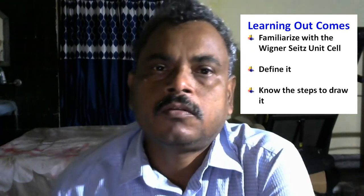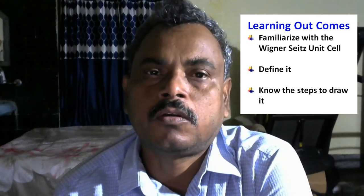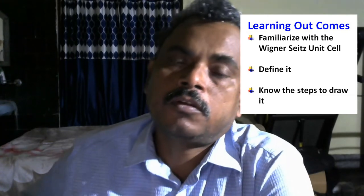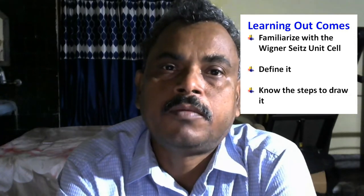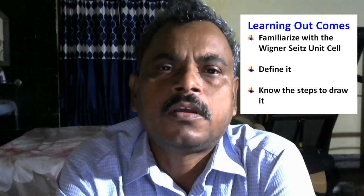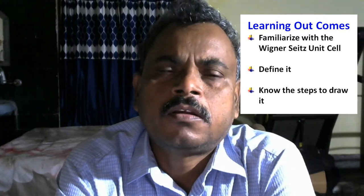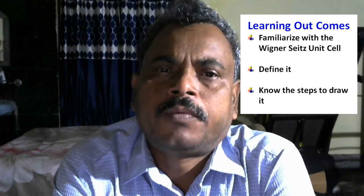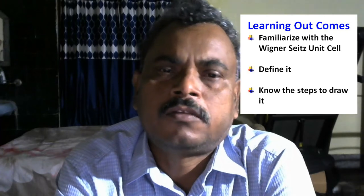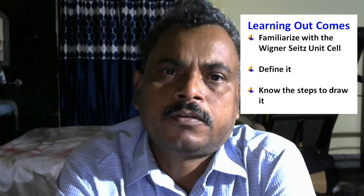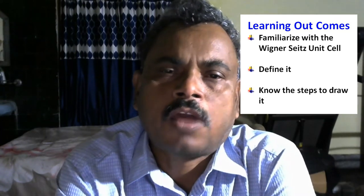Later on, when we discuss the reciprocal lattice, we will draw a similar kind of unit cell there, which will be called the Brillouin zone. The Brillouin zone is a very important concept in solid state physics, because through it you can predict a number of physical phenomena like X-ray diffraction, lattice vibration, and many other properties.